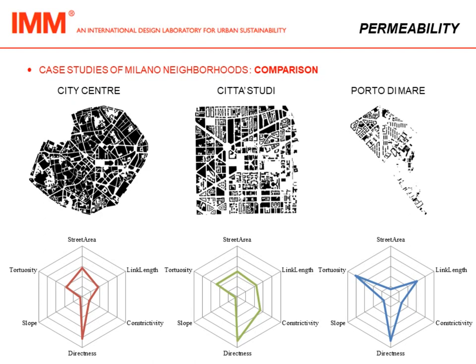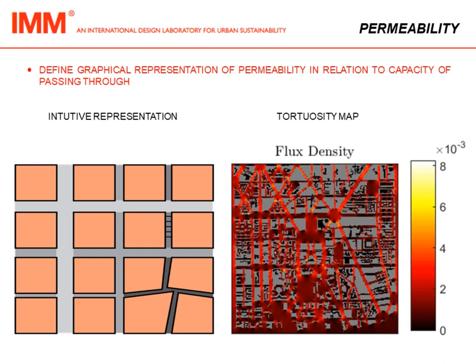Tortuosity and connectivity are two other values that will be better explained in another video to be published soon. Here is another possible representation: the first is more intuitive, using a color gradient to show why some streets are more permeable than others, and on the right side a tortuosity map based on a flux density analysis that represents similar aspects.